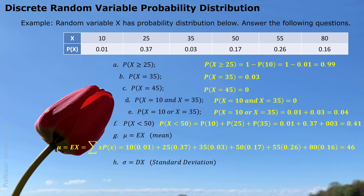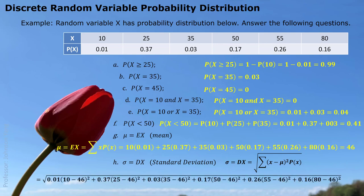If by chance you get an answer less than 10 or greater than 80, that is definitely not right — something must be wrong. Then we calculate the standard deviation using the formula with the average value of 46 already known. We take each individual value, subtract 46, square the result, multiply by the corresponding probability, sum all those products, and then take the square root. The answer is 19.71, which represents the average distance of each individual possible value from the center value 46.